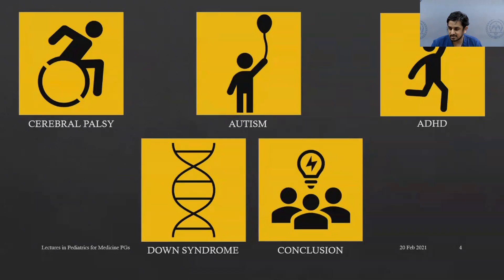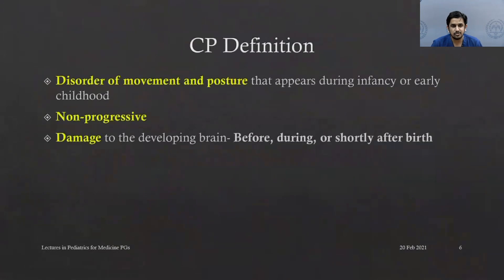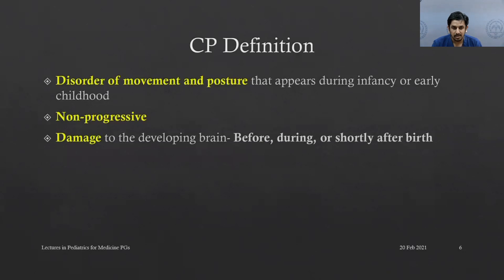Going ahead, we'll first look at cerebral palsy. Cerebral palsy is a disorder of movement and posture that appears during infancy and early childhood. It is a non-progressive disorder caused by damage to the developing brain that may occur before, during, or shortly after birth. This means it predominantly affects motor milestones, with abnormal posture of limbs often associated. Non-progressive means children tend to improve with therapy and do not regress at any point.